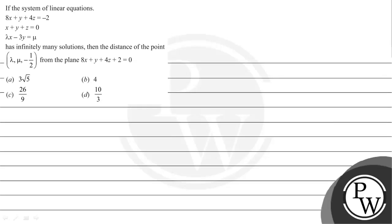Hello everyone, let's read the given question. The question states: if the system of linear equations 8x plus y plus 4z equal to minus 2,